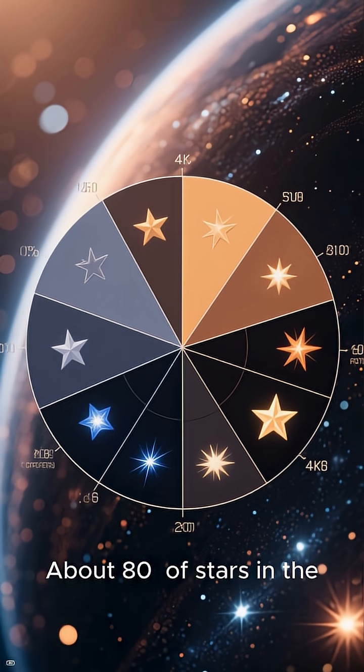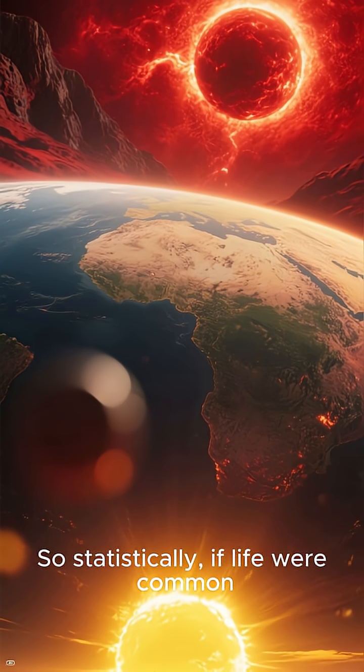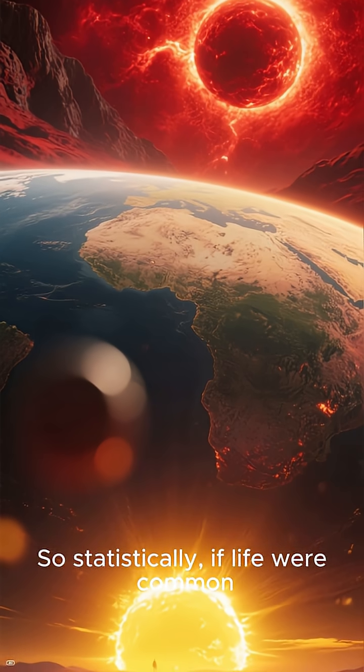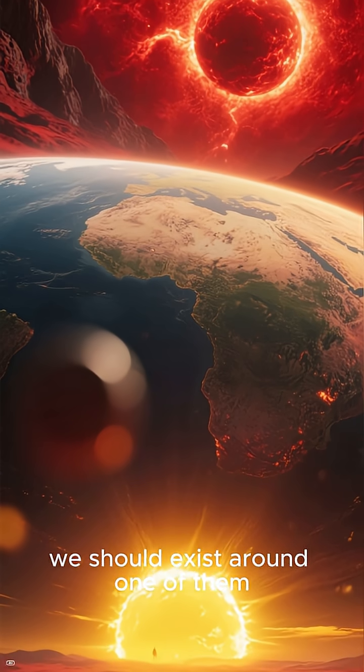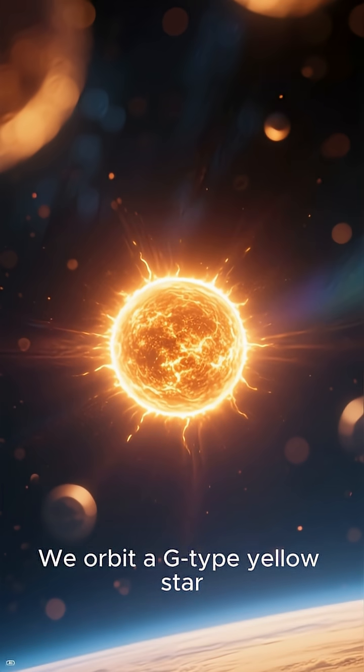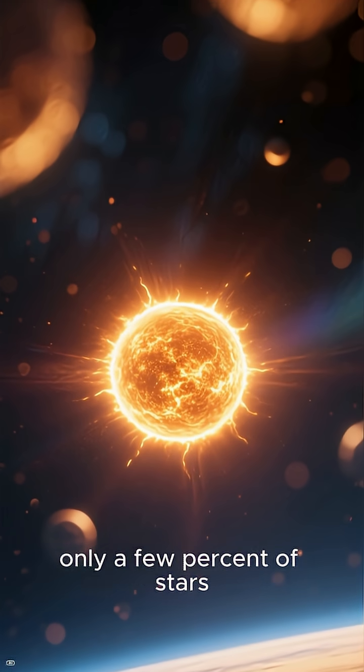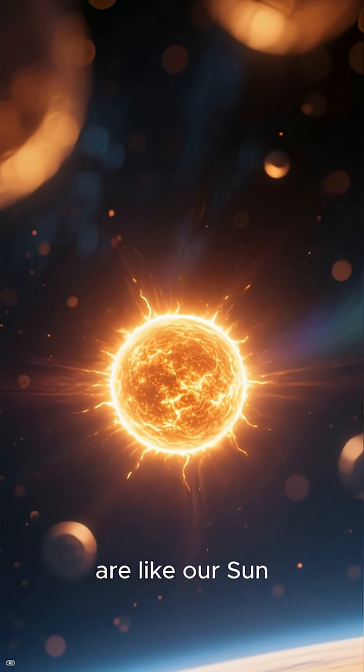About 80% of stars in the universe are red dwarfs. So statistically, if life were common, we should exist around one of them, under a dim red sky. But we don't. We orbit a G-type yellow star, and that's already rare. Only a few percent of stars are like our sun.